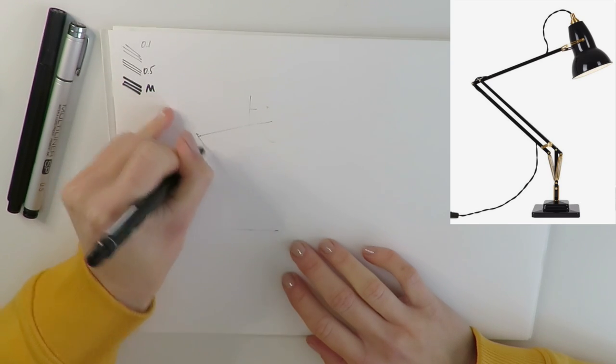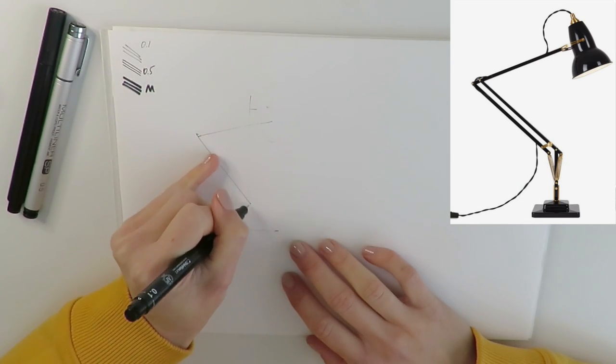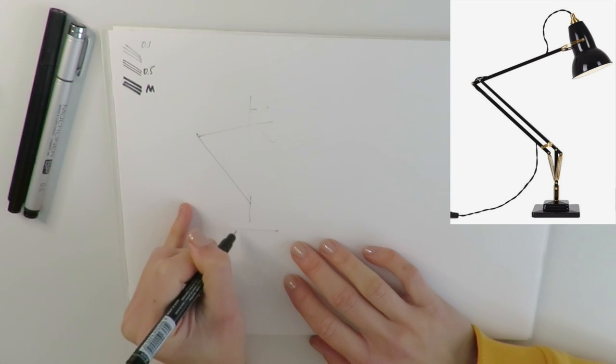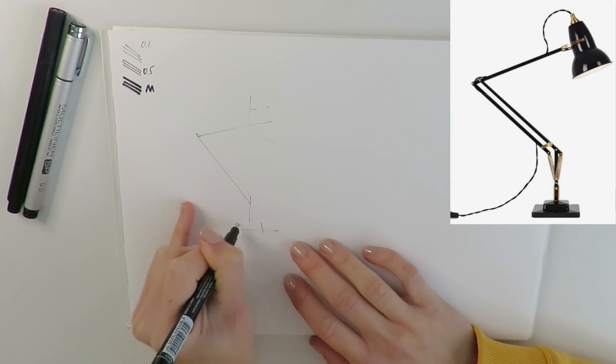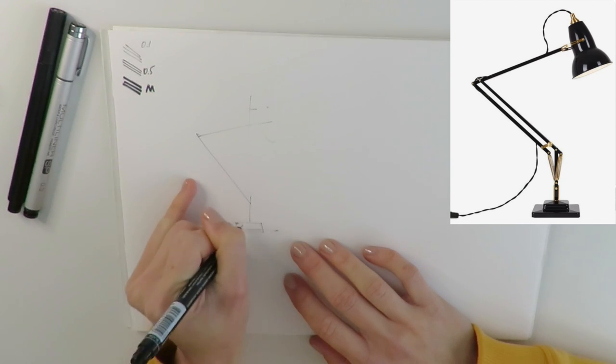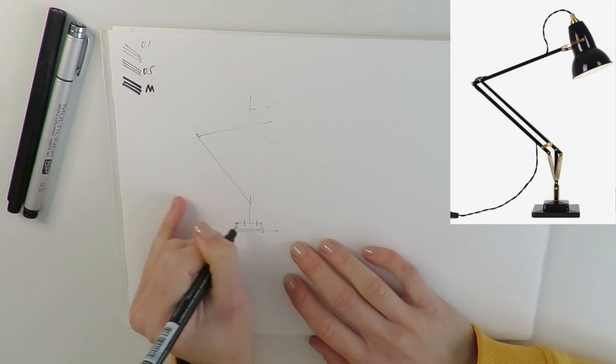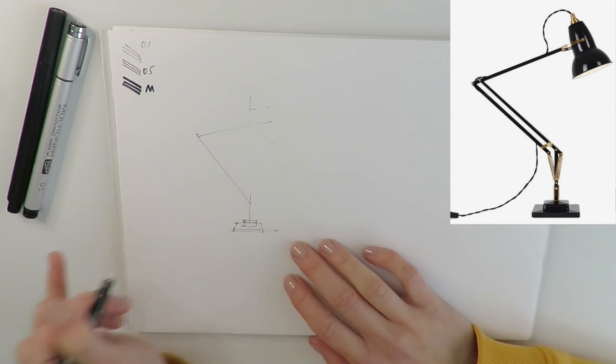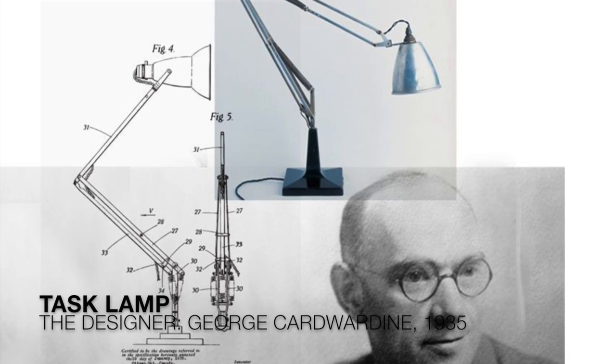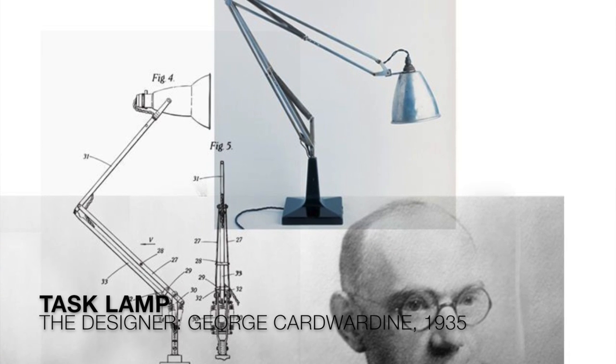All right so the very first lamp drawing I will accomplish by using the thinnest liner. In my case it has 0.1 thickness and it is from Touch. The lamp we are drawing today is the iconic fixture by the designer George Cadwardine. Its name is Tusk lamp and it was designed in 1935.